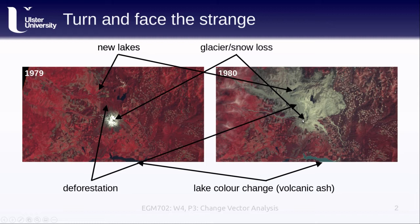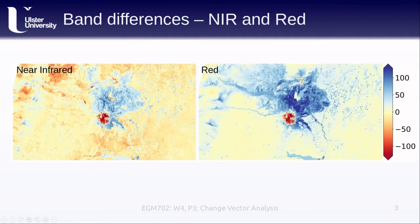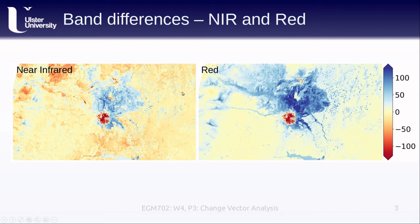So there are a number of different changes that we can see. If we look at the band differences between the near-infrared and the red bands from these two images, we can start to see those changes here as well. In the near-infrared, we see the lake changes represented by a drop in near-infrared reflectance. We see the snow and glacier loss represented by a drop in both near-infrared and red reflectance, and the deforestation represented by an increase in near-infrared and an increase in red reflectance.